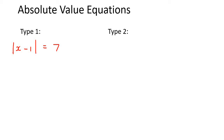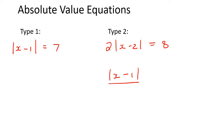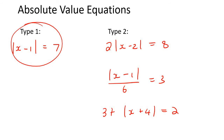We'll be looking at some of those today. In the other scenario, we're going to look at ones where the absolute value is not by itself — examples like this, where there's a random number in the front, or something like x minus 1 over 6 equals 3, or maybe 3 plus x plus 4 equals 2. The first part of the video will be the Type 1s, and the last part will be the Type 2s.